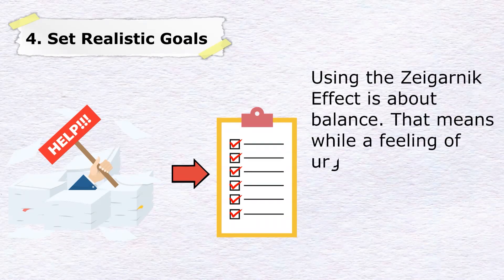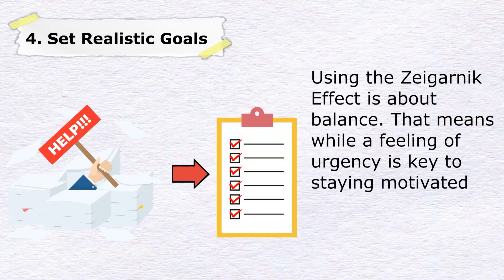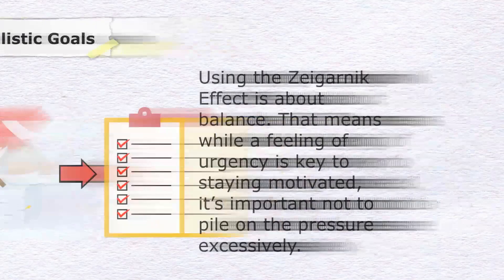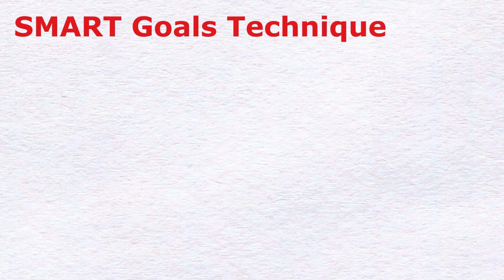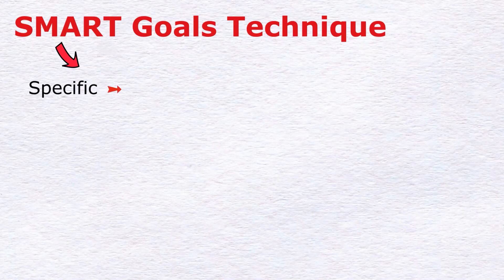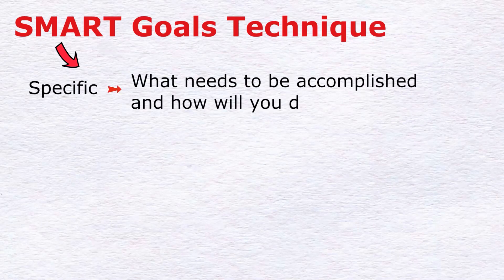Using the Zeigarnik effect is about balance. That means, while a feeling of urgency is key to staying motivated, it's important not to pile on pressure excessively. Try using the SMART goals technique, which is something we cover in one of our most popular videos when prioritizing what to do and when.